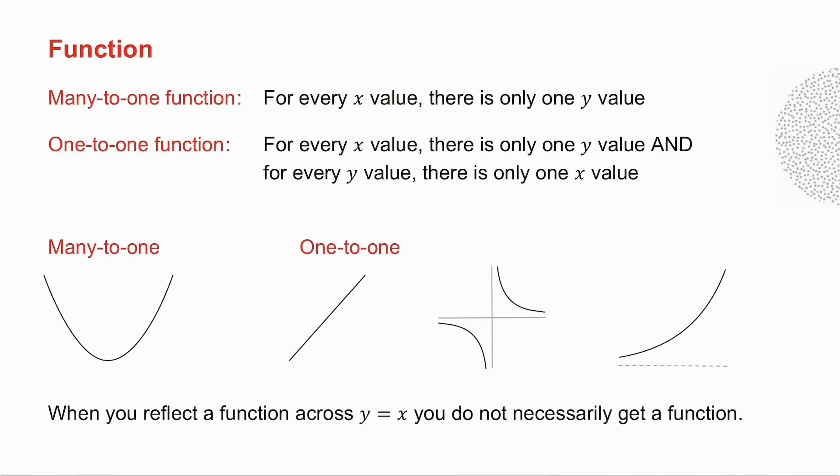Now a function. We talk about a many-to-one function where for every x value there's only one y value. Now we've been used to that, but you also get more specifically a one-to-one function where not only for every x value is there only one y value, but there's also for every y value there is only one x value. So if I take a parabola, if I take a particular y value, you will notice that there are two places where I've got x values. So a parabola is an example of a many-to-one function.